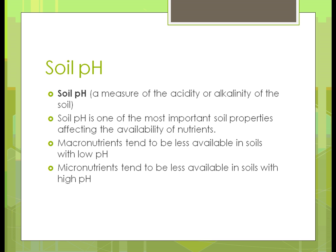Macronutrients tend to be less available in soils that have a low pH. So if you have a soil pH of 0, 1, 2, or 3, that means you have an acidic soil, and those macronutrients — nitrogen, phosphorus, potassium — aren't going to be as available. Even though they're there, they won't be used because the pH is too low. On the other hand, micronutrients tend to be less available if you have a high pH — the micronutrients being sodium, boron, manganese, and ones like those.